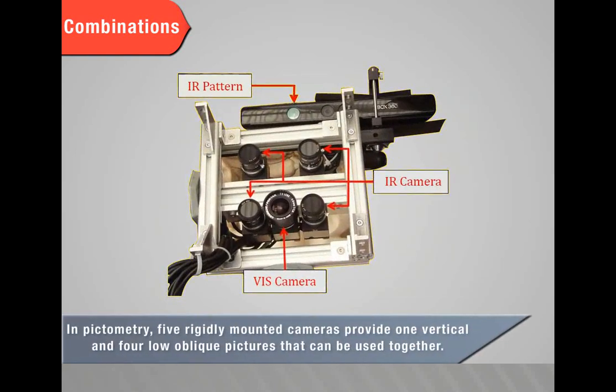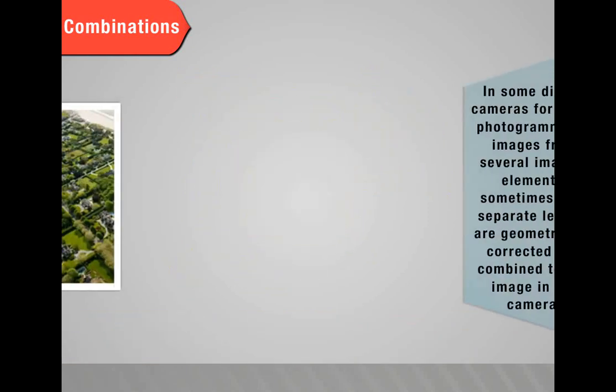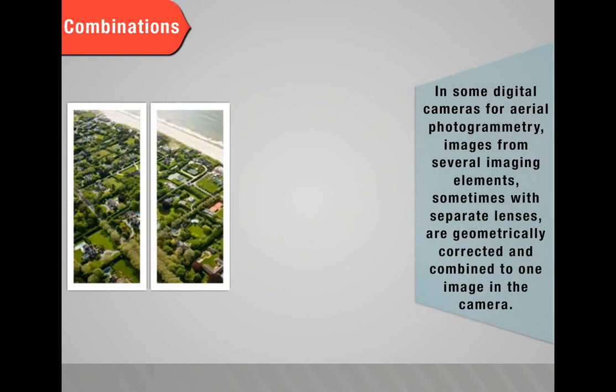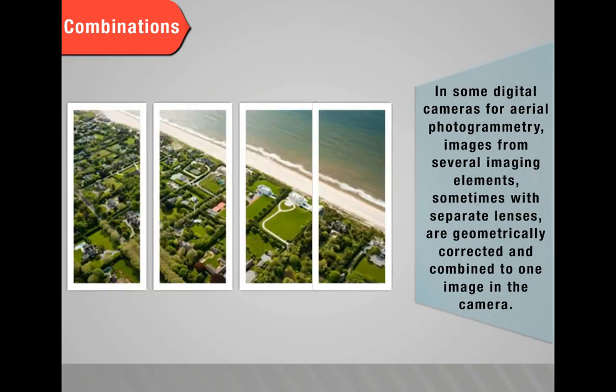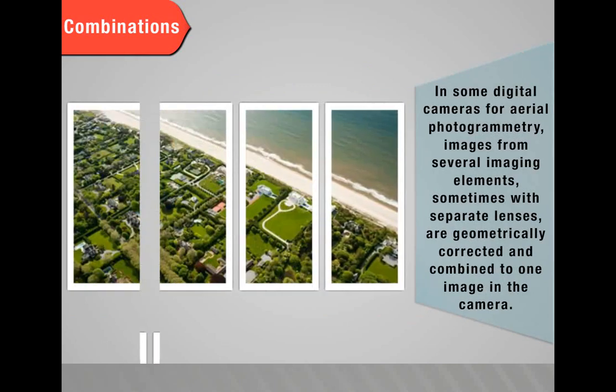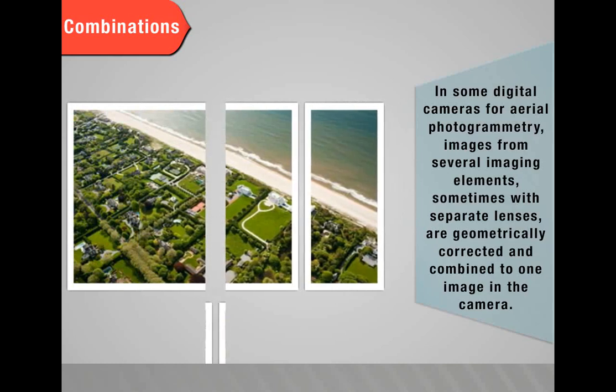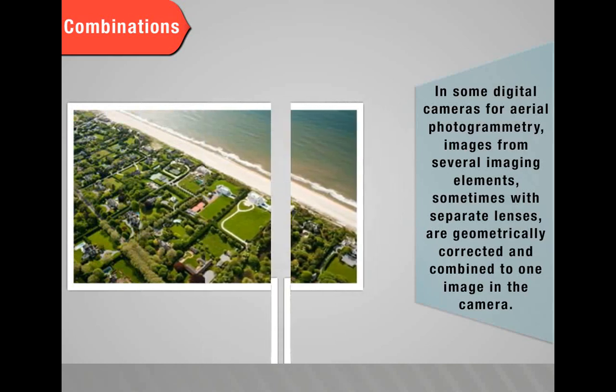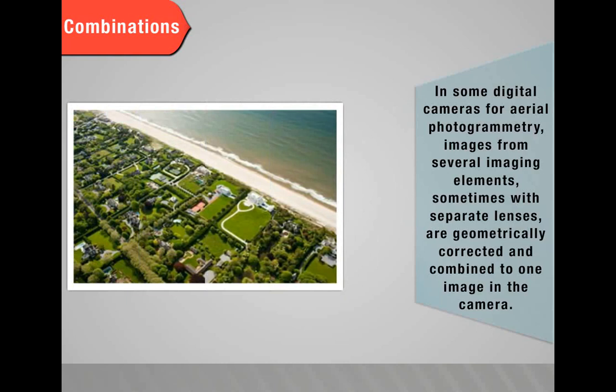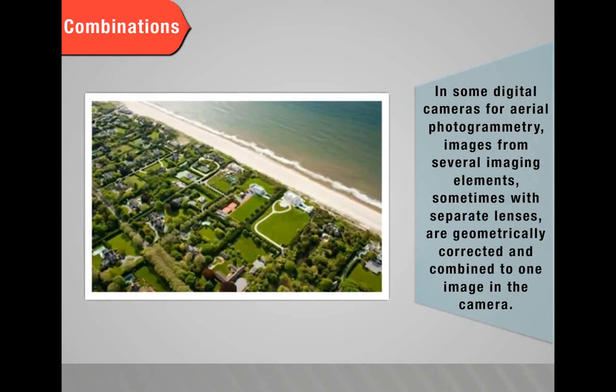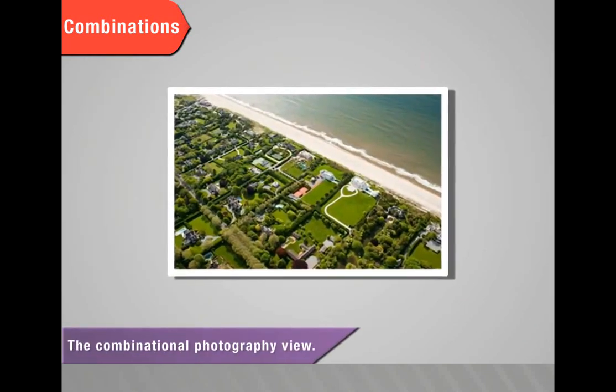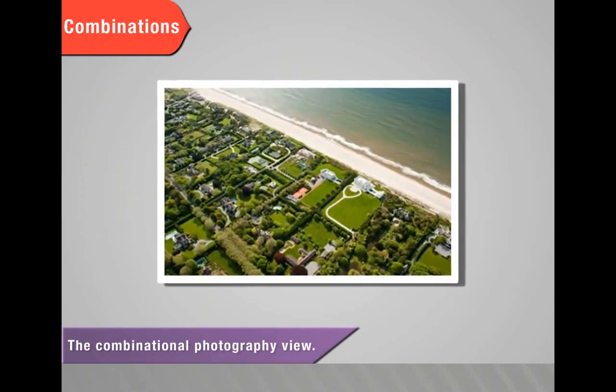In pictometry, five rigidly mounted cameras provide one vertical and four low oblique pictures that can be used together. In some digital cameras for aerial photogrammetry, images from several imaging elements, sometimes with separate lenses, are geometrically corrected and combined to one image in the camera.